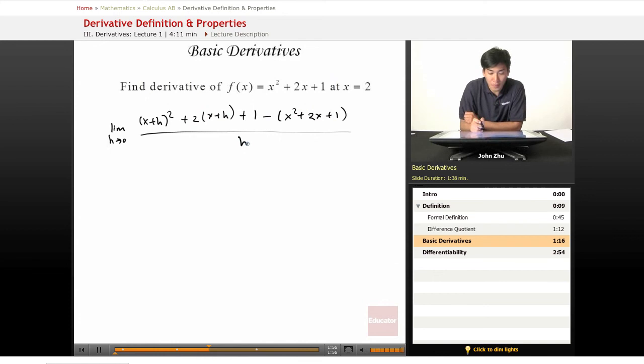So we see that x plus h term here and 2 times x plus h here and minus this f of x term. So then if we expand this whole thing out and simplify it, we are going to get a term like this.